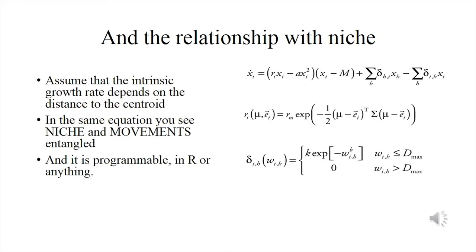The above can be related to the niche by assuming that the growth rate r depends on the environment. That is the second equation: a Gaussian relationship, meaning there is some optimal value that defines the centroid of the niche, and toward the margins of that centroid you find decreased values of the growth rate. Movements are defined in the third equation. The entire model can be programmed in R or another language, and it has been programmed in R by Luis Osorio.